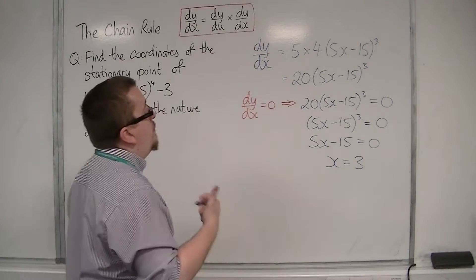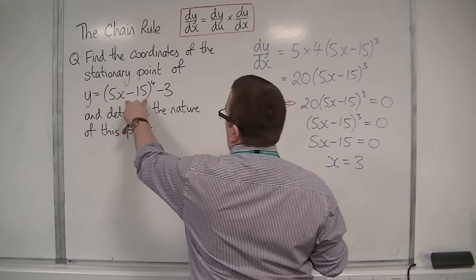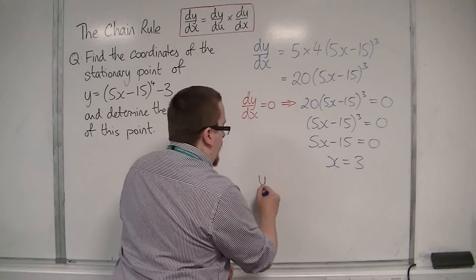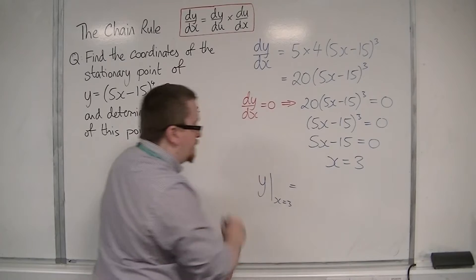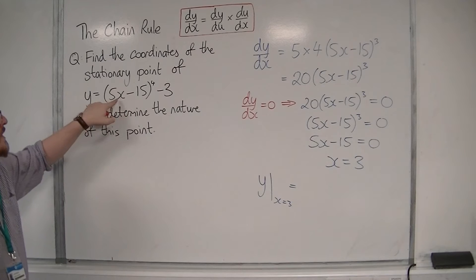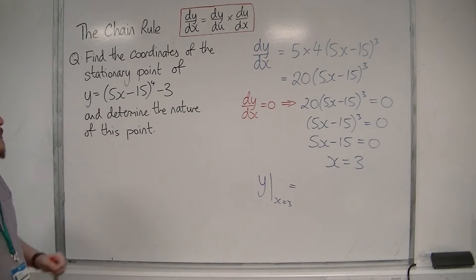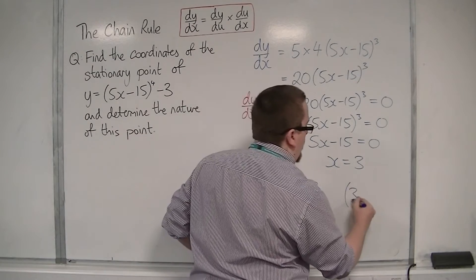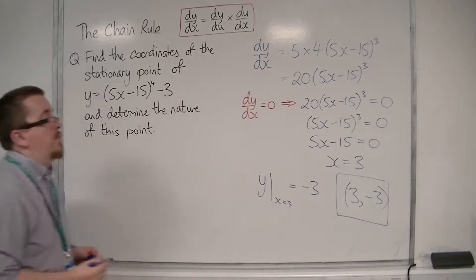Substituting x = 3 into the original function: y = (5×3 - 15)^4 - 3 = (0)^4 - 3 = 0 - 3 = -3. So the stationary point is at (3, -3). Those are the coordinates of the stationary point.